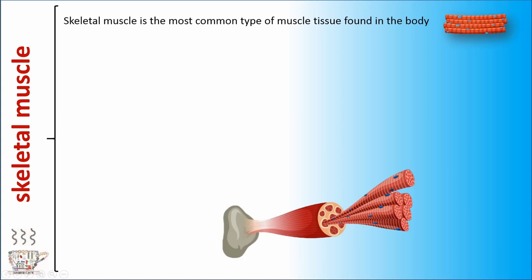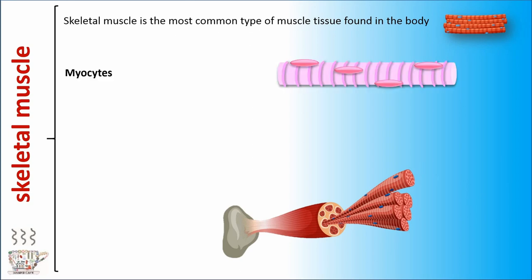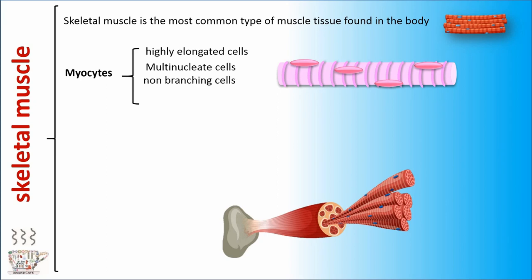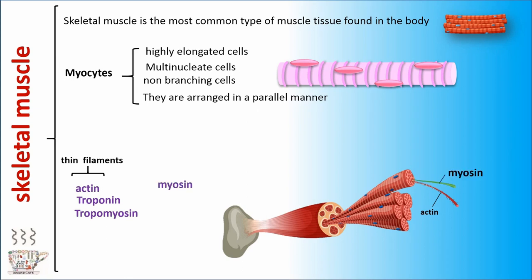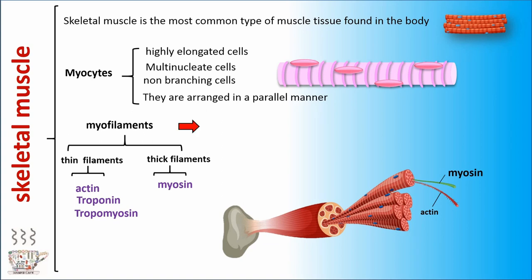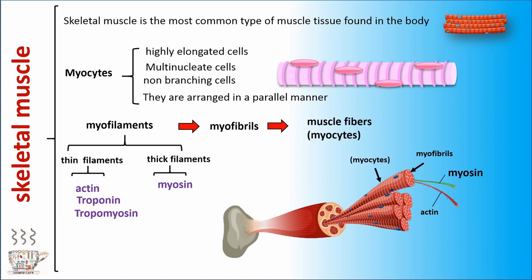Skeletal muscle is the most common type of muscle tissue found in the body. Myocytes are highly elongated, multinucleated, non-branching cells and they are arranged in a parallel manner. Tropomyosin, troponin and actin make thin filaments. Myosin makes thick filaments. Thin filaments and thick filaments make myofilaments. A lot of myofilaments create myofibrils. A lot of myofibrils create muscle fibers or myocytes, and a lot of muscle fibers or myocytes make a skeletal muscle.